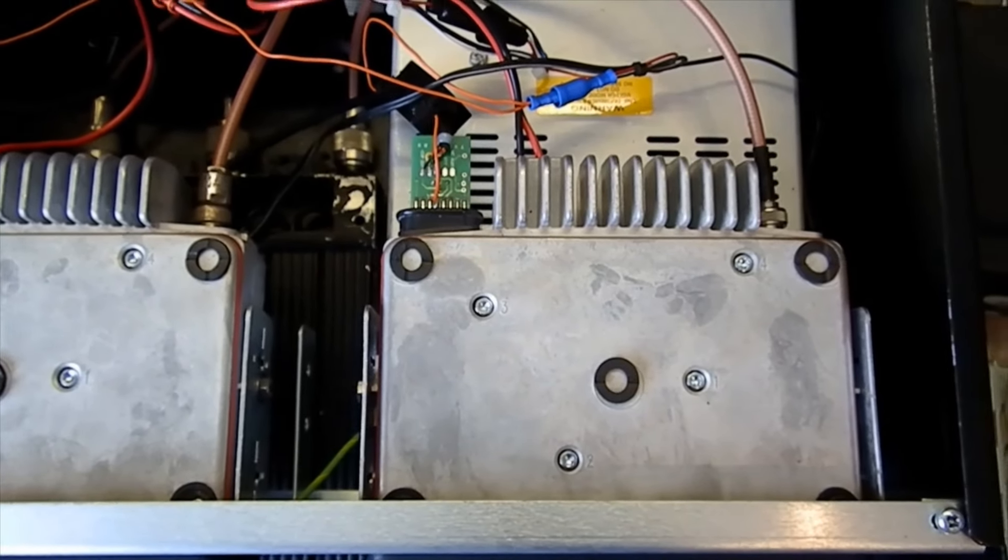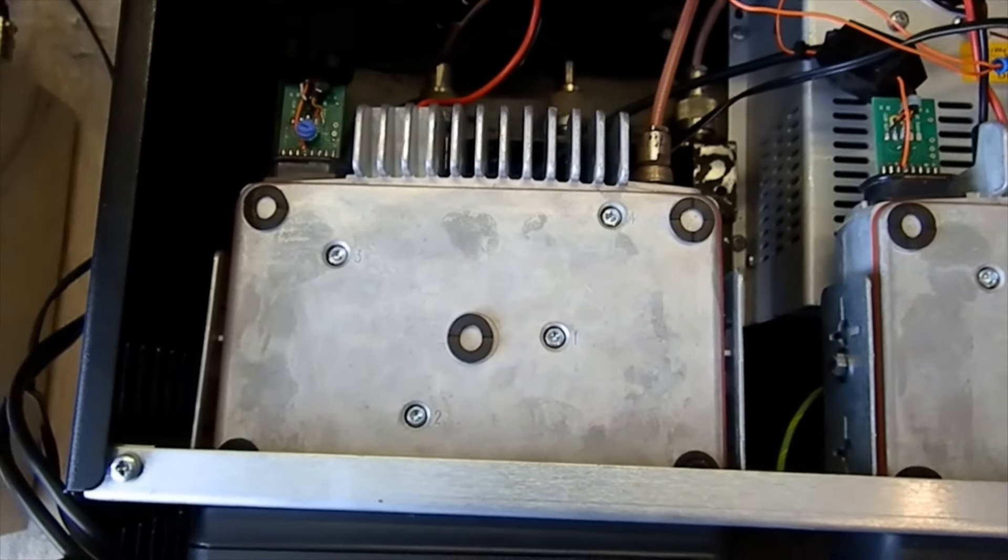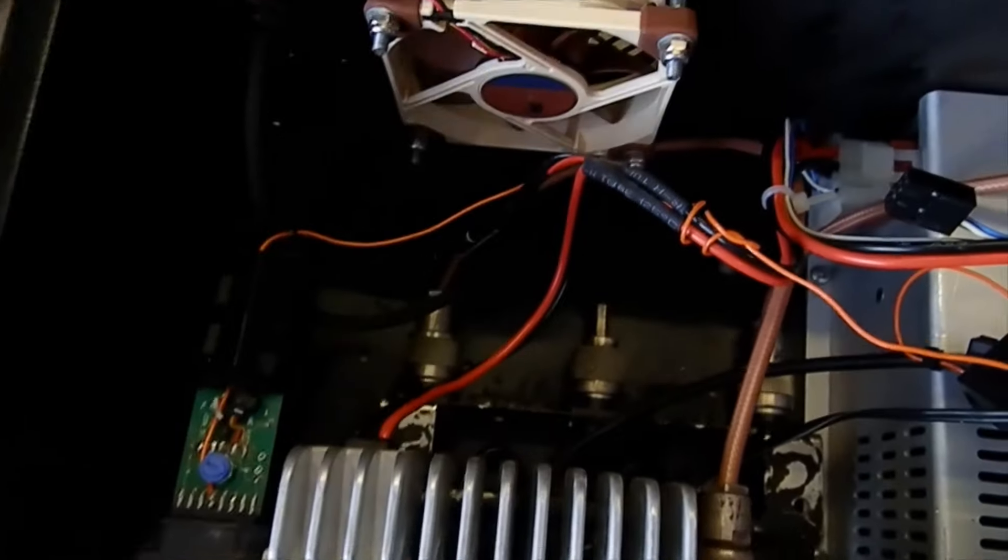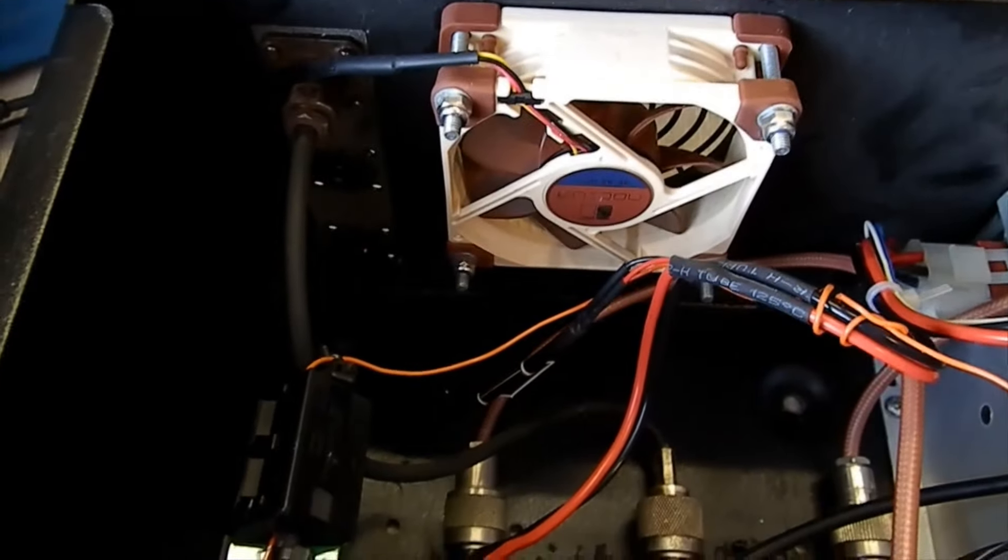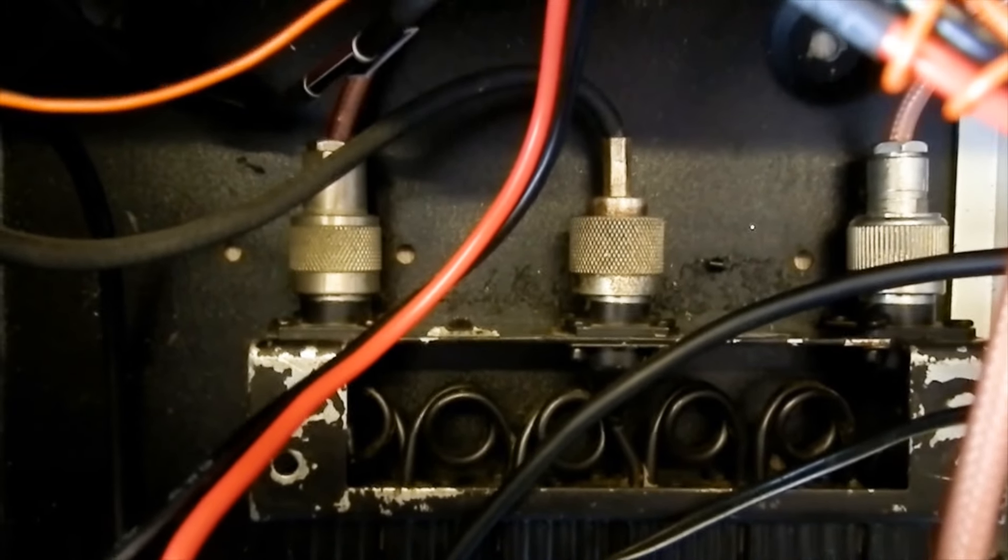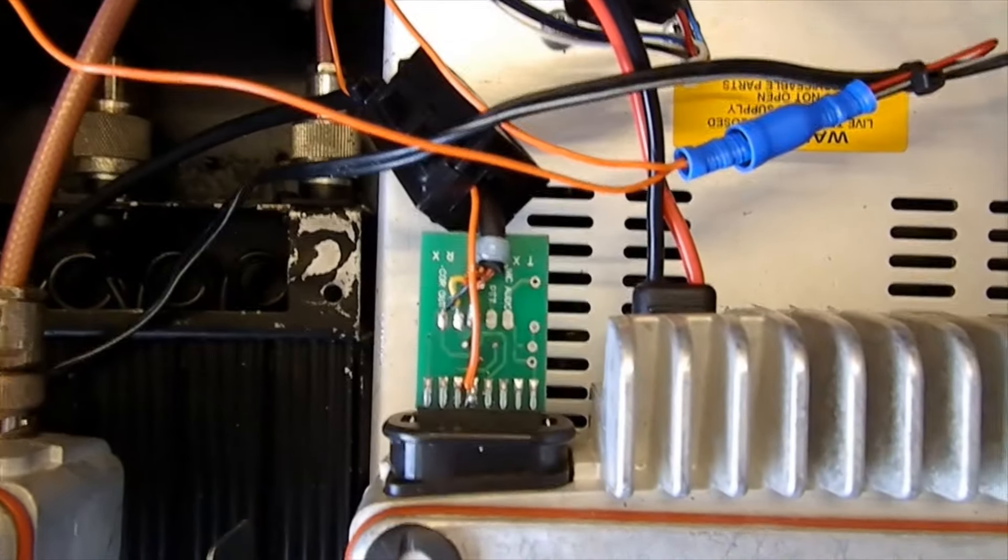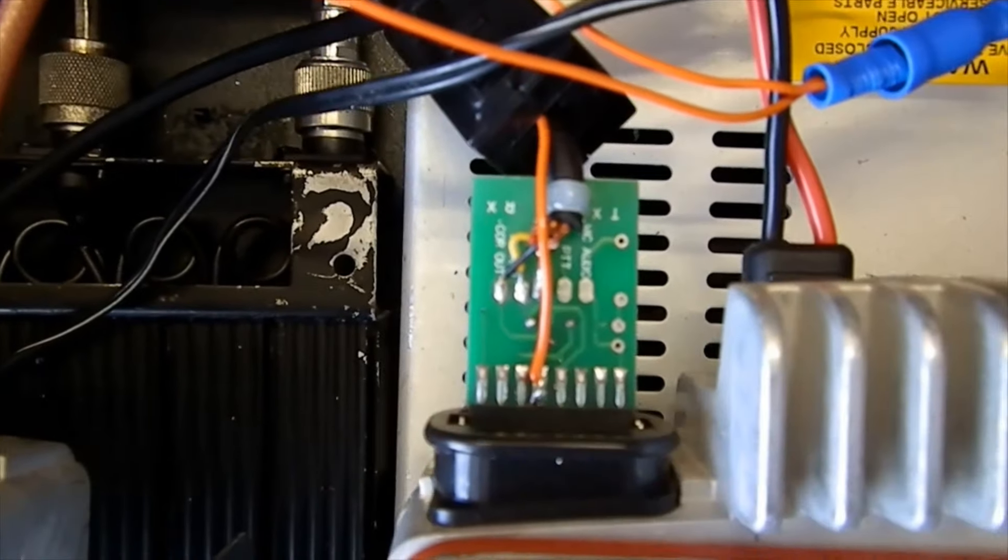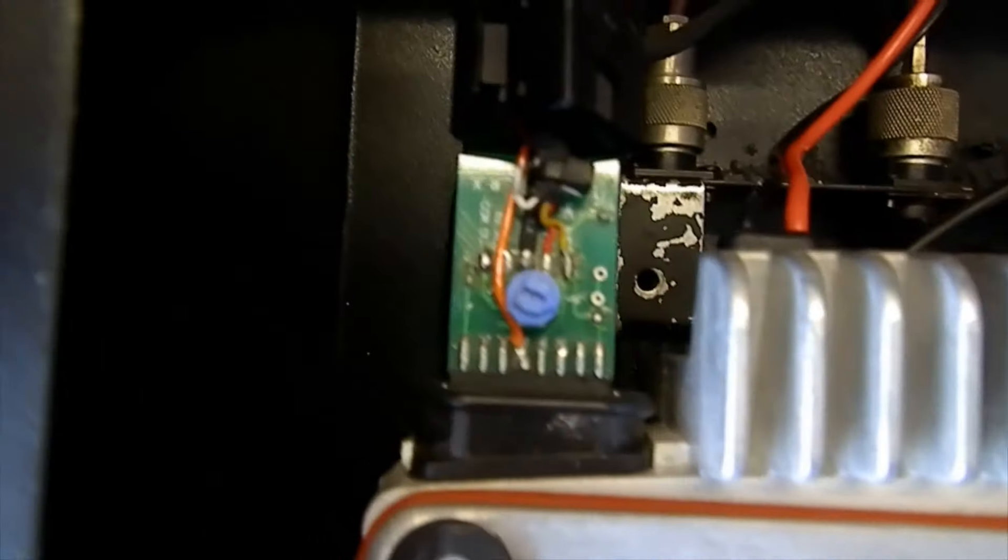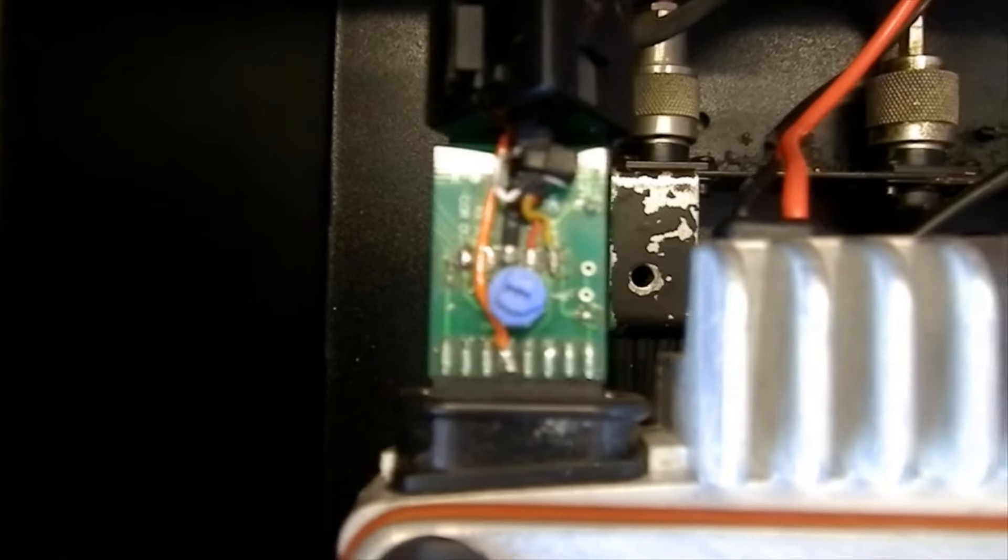There are the two radios. I'll try and hold the camera still. There are the two transceivers. Then at the back there's a cooling fan, the back of the duplexer down the bottom with the three connections: aerial, transmitter, receiver.